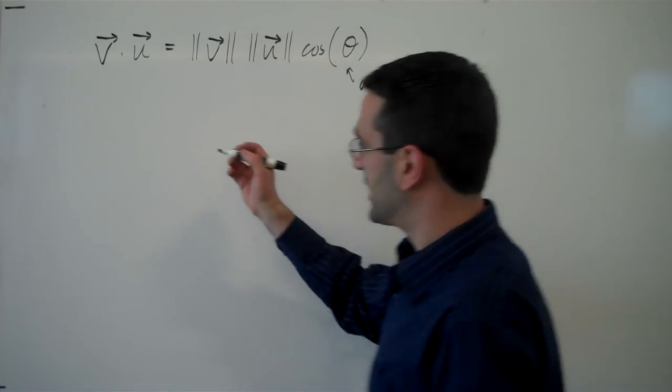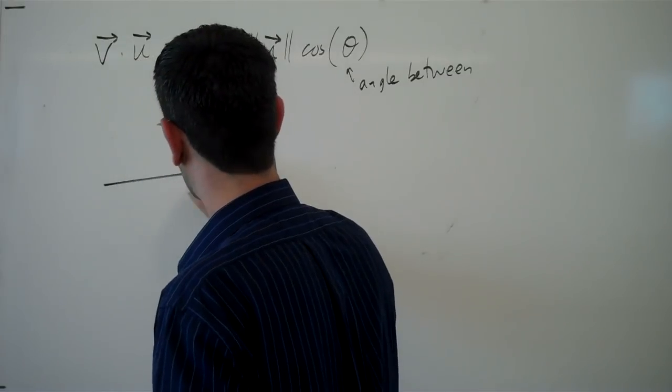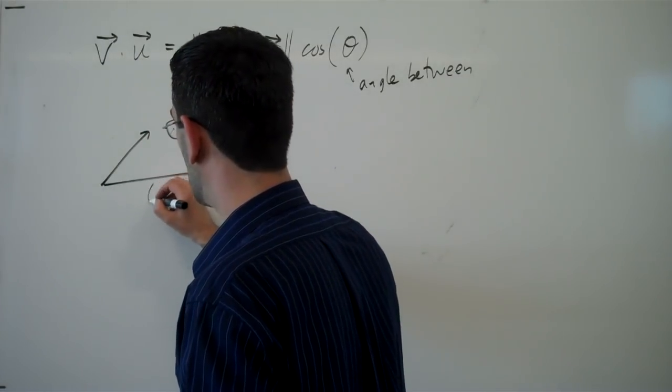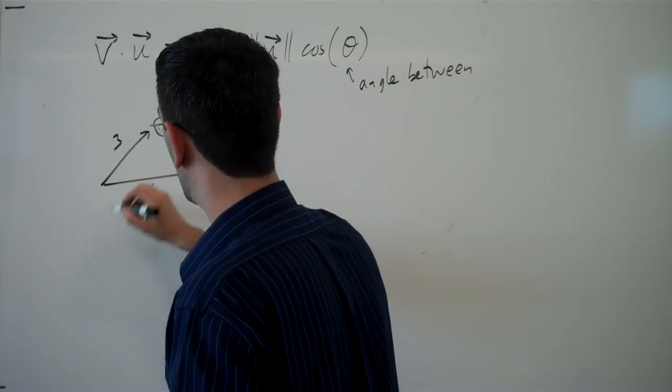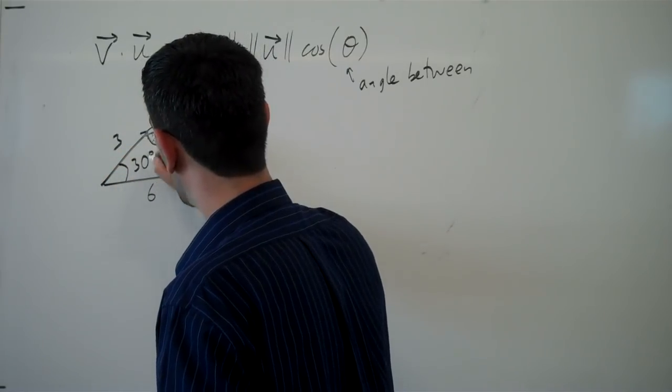In a very simple case, we can imagine that we have two vectors, one with length 6 and one with length 3, with an angle of 30 degrees between them.